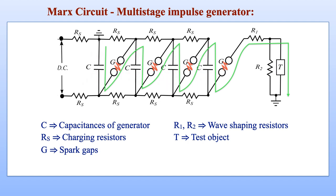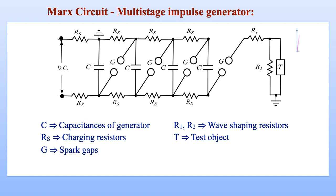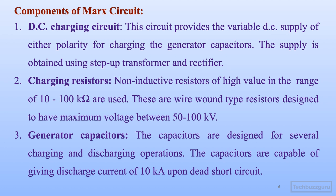Consequently, the capacitors will discharge through the spark gaps and energy stored in the capacitors will be delivered to the test object as an impulse voltage. As the energy is delivered to the test object, the capacitors get discharged and hence the spark gaps will also extinguish after the impulse has appeared across the load. This is the basic operating principle of a multi-stage impulse generator.